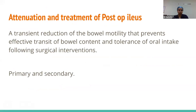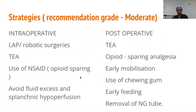Prevention and treatment of post-operative ileus: post-op ileus is defined as a transient reduction of bowel motility that prevents effective transit of bowel contents. It can be primary (without surgical complications) or secondary (with surgical complications). Recommended strategies include laparoscopic or robotic surgery, adequate analgesia with epidural or TAP block, and avoiding fluid excess and splanchnic hypoperfusion. Post-operatively: analgesia, early mobilization, chewing gum, early feeding, and NGT removal — all with moderate recommendation.